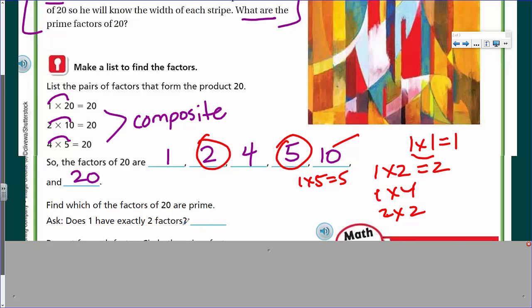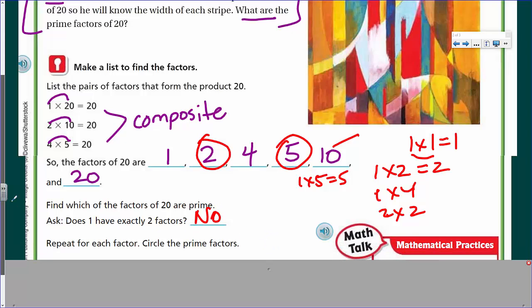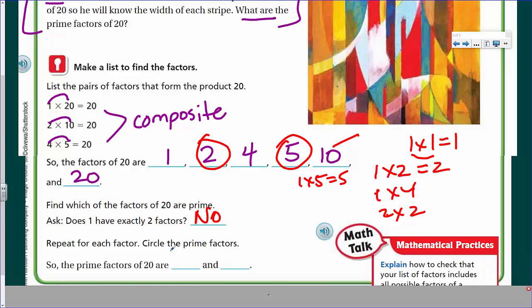So, does 1 have exactly 2 factors? No, it does not. That's interesting. They just put that in there. Repeat for each factor. So, circle the prime numbers, which we did, and we determined that is 2 and 5. So, those are the 2 prime factors of 20. Now, 2 times 5 does not equal 20. We're just saying those are the 2 prime factors. Prime meaning that they have exactly 2 factors.